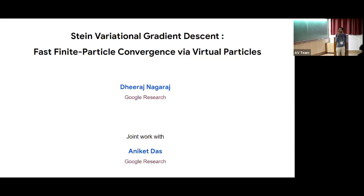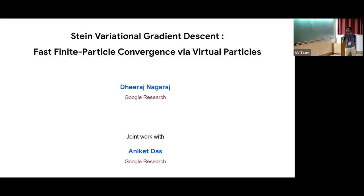Welcome back to the afternoon session. The first talk is by Dheeraj Nagaraj, who is a research scientist at Google Research. Dheeraj has done very interesting work in both probability and optimization, and today he'll be talking about Stein variational gradient descent.